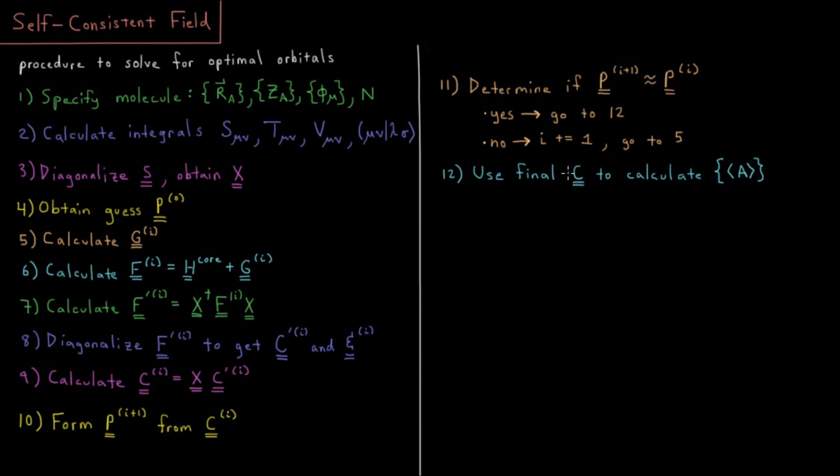And our molecular orbitals in aggregate represent the wave function of our system. And as we know from quantum mechanics postulate one, if we know the wave function of the system, we can use that wave function to calculate any observable property of the system. So the self-consistent field procedure, once we're done, we should have a wave function which we can use to calculate whatever properties we like.